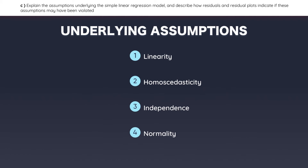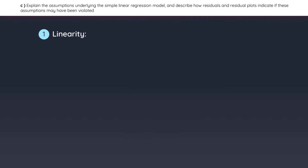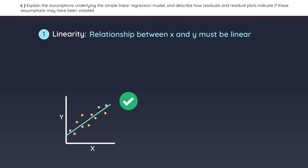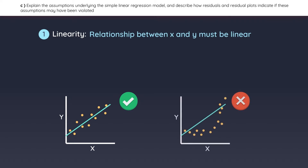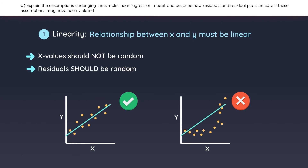In order for a linear regression to work, there are four assumptions that must be met. The first assumption is linearity, which states that the relationship between the dependent and the independent variables must be linear. If it's not linear, then a linear model will not work. For this assumption, you should remember that X values should not be random. However, the residuals should be random, meaning that some values will randomly fall above the regression line, and others will randomly fall below it.